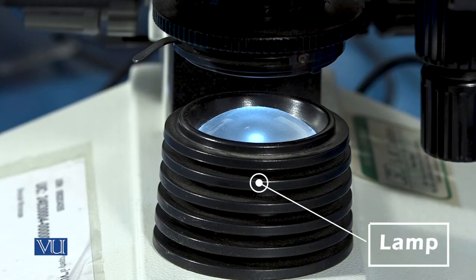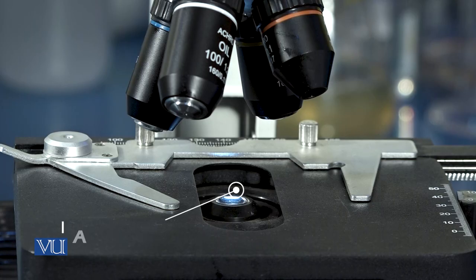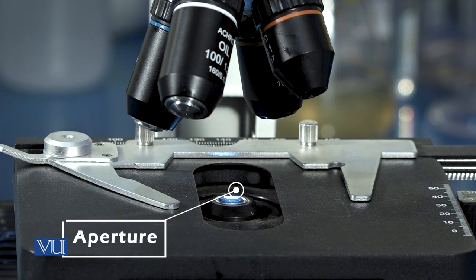Lamp or illuminator is used as a light source. The light passes through the small opening called aperture.